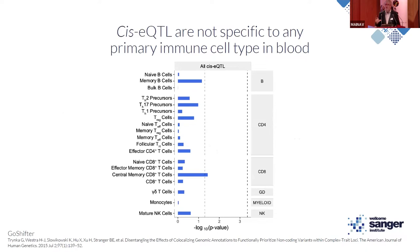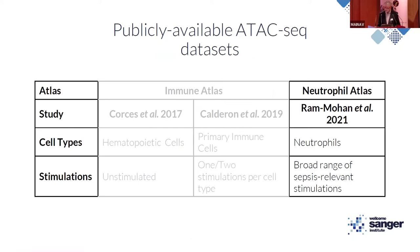I identified differentially accessible peaks — regions of the genome easier to access under a stimulated state — and tested for enrichment of cis-eQTL using the permutation-based test implemented in GoShifter. We did not identify any specific enrichment in any specific cell type. There is a nominal association with central memory CD8-positive T cells, but nothing passes FDR. We were not particularly surprised, because we know neutrophils are the most important cell type in sepsis, and they were not represented in this atlas.